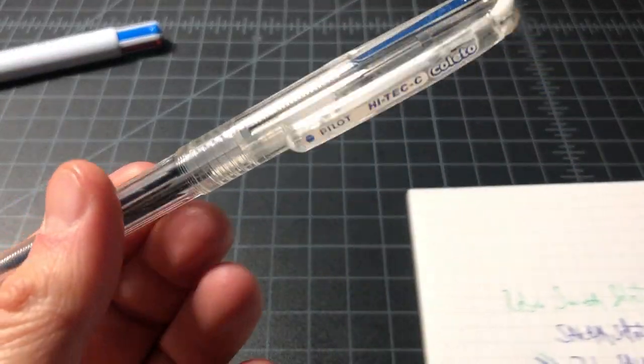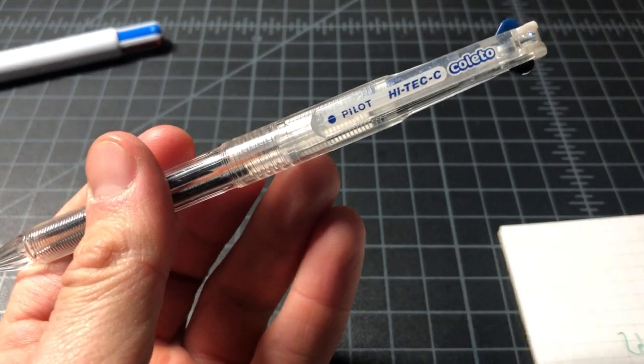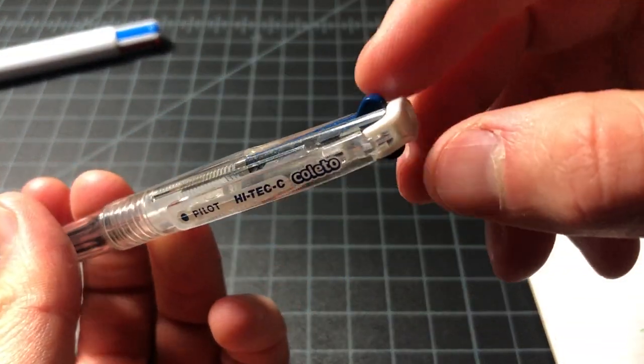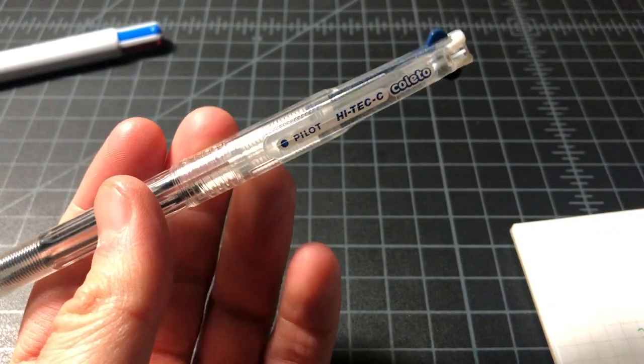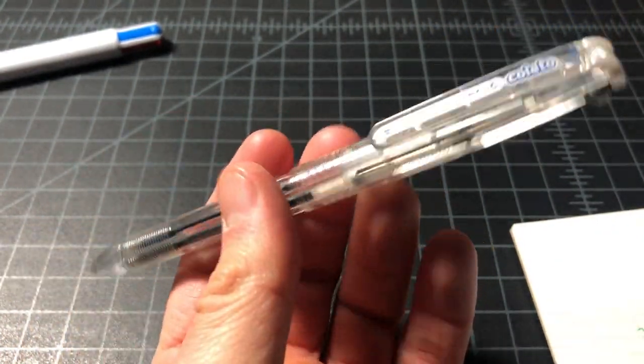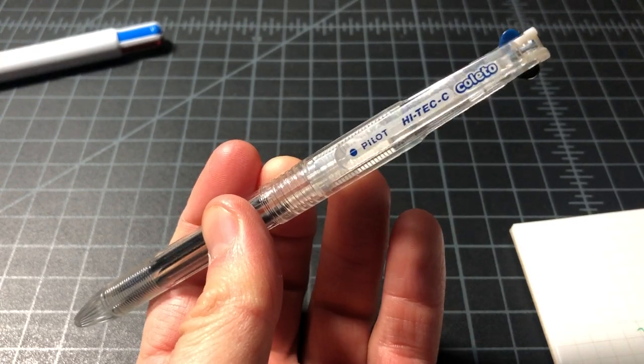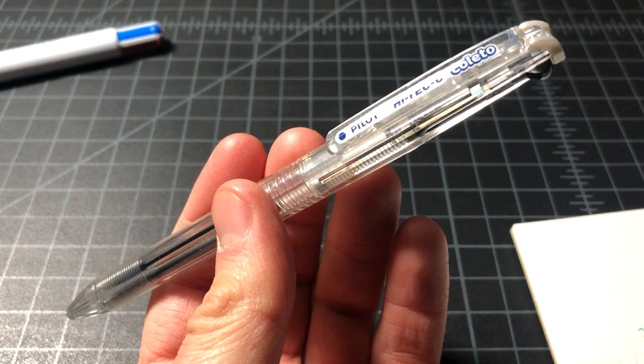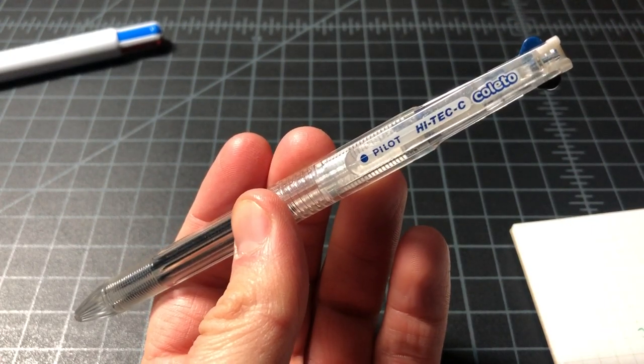If you like the Zebra Sarasa line, then this 0.5 and 0.7 millimeter are great. But my strong recommendation is you pick up the original Hi-Tec-C Coleto. The body will cost you about two dollars, each of the refills will cost you maybe like a buck twenty-five. So for five dollars or so you have what I would consider the best multi-pen sold today. Thanks for watching.